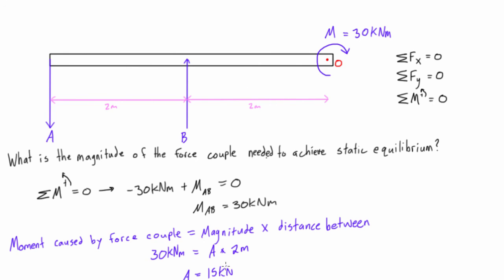And then this moment, because this 15 kilonewtons is required to give us this positive moment of 30 kilonewton meters, that will cancel out this 30 kilonewton meters, and this object won't be rotating at all. So it will be satisfying static equilibrium, because all of these will be set to zero.